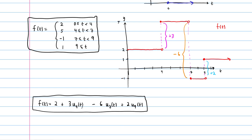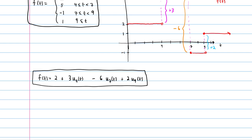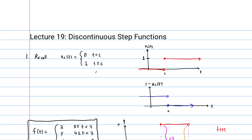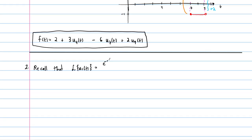Writing it this way is useful because it's a linear combination of functions we know how to take the Laplace transform of. Recall from a previous lecture that the Laplace transform of u sub c is e to the minus cs over s, for s greater than 0. We worked this out from the definition of the Laplace transform.